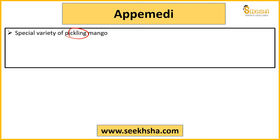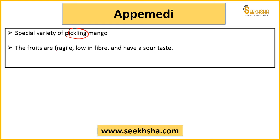Apimidhi is very widely used for pickling. A question can be asked: 'Which among the following GI-tagged varieties of mango is specially used for pickling purpose?' It is a hard, fragile fruit, which is why it makes good achaar. Fiber content is low, taste is sour/tangy, and its latex has a quite strong smell - the aroma is very strong.